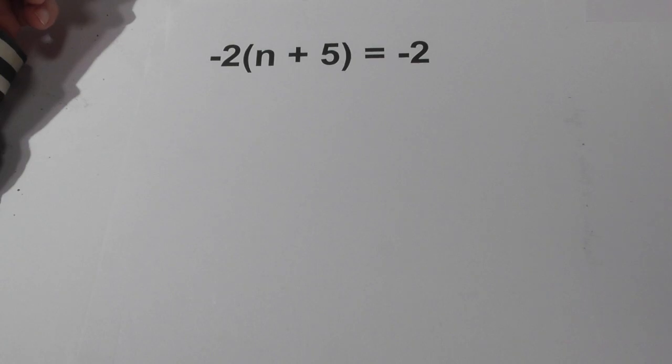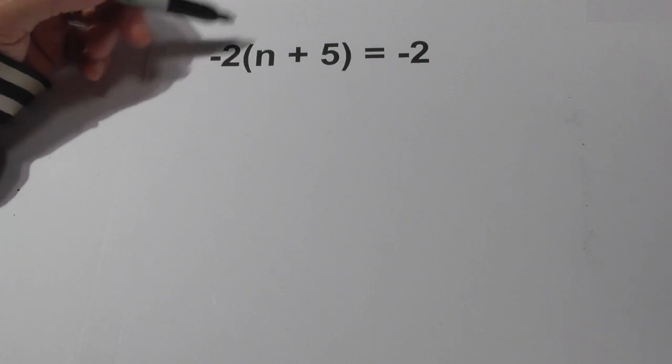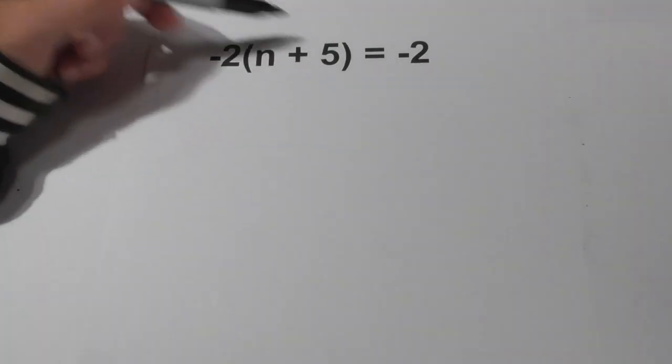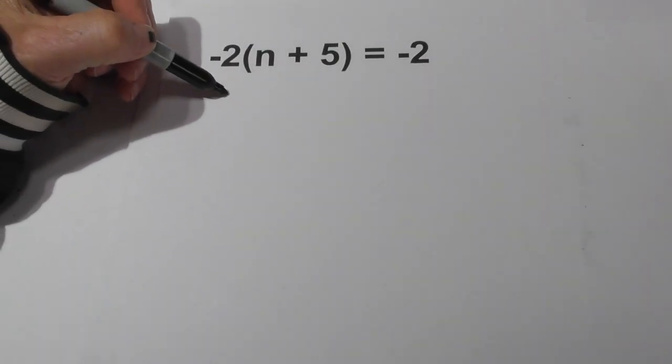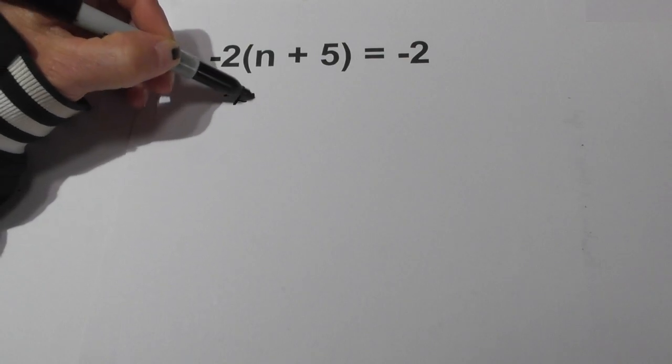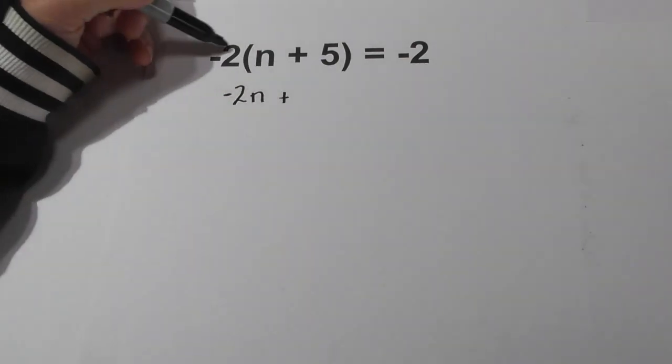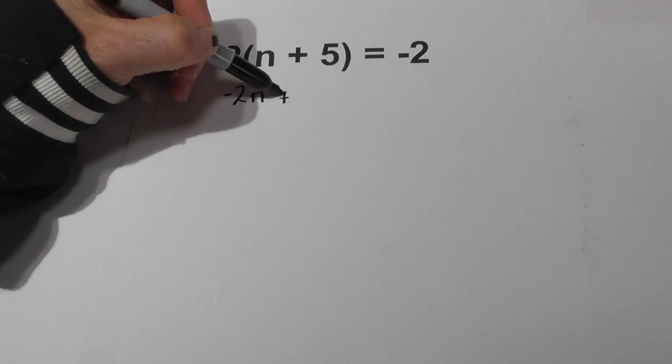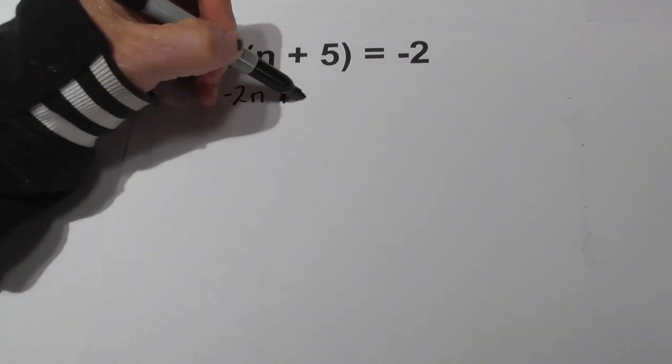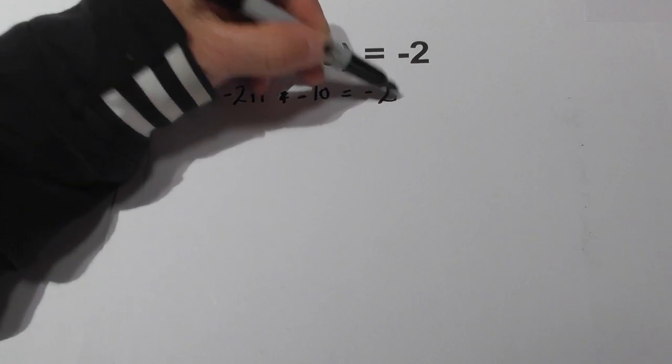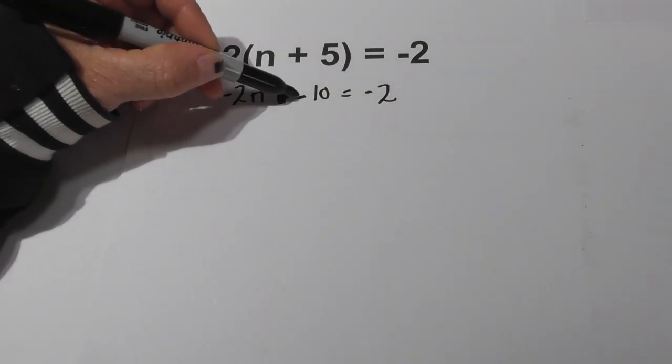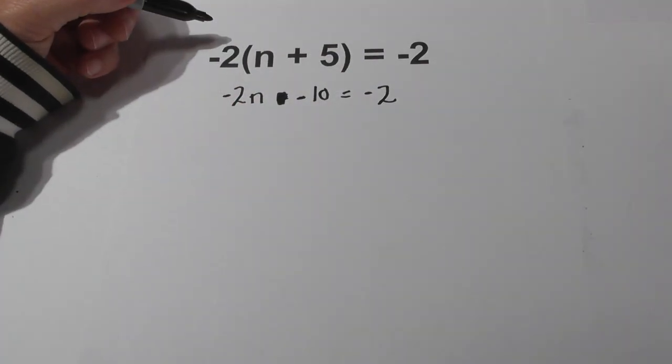The first thing we need to do is distribute the 2 on the outside of the parentheses. So I'm going to go 2 times n which is -2n plus -2 times 5, which is -10, equals -2. So again it's -2n - 10 = -2.